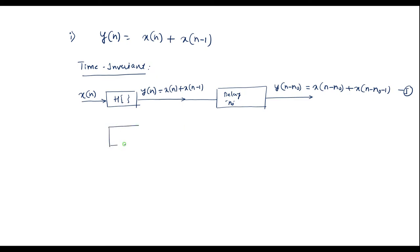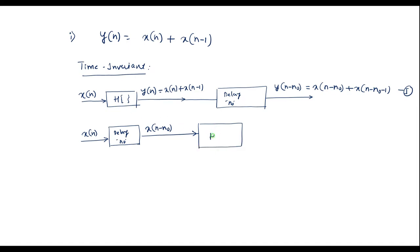Now I will apply the shifted input signal to the system. First I will swap the systems, using a delay system which provides a delay of n-naught. Input x of n passes through the delay to give x of n minus n-naught. Now applying this to the same system: the system adds x of n minus 1 to the input, so y dash of n equals h of x of n minus n-naught, which gives x of n minus n-naught plus x of n minus n-naught minus 1.